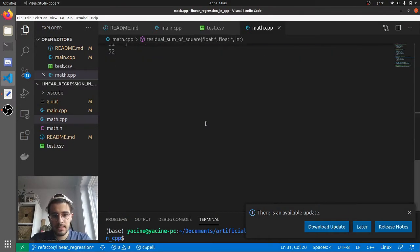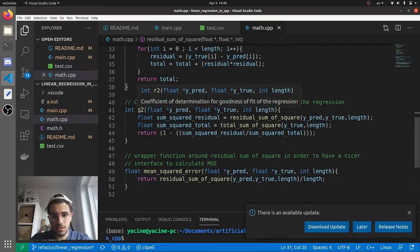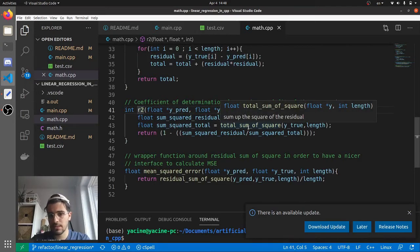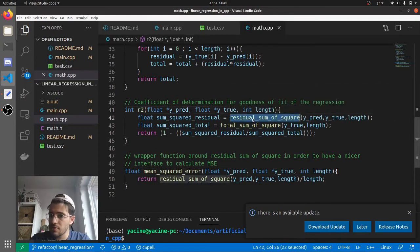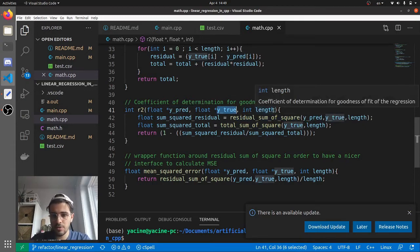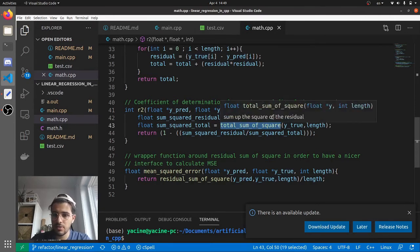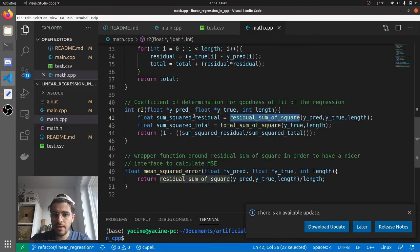So let's take a look at r2. It's over here. I tried to keep it as simple as possible. You calculate the residual sum of squares with your prediction, your true values, and you need the length. And then you calculate the total sum of squares. So this is the red thing that we saw before, this is the blue thing that we saw before, and then you do 1 minus this divided by that.